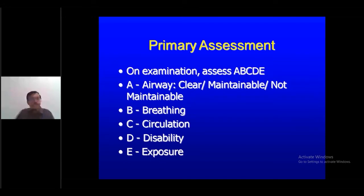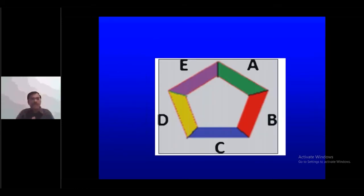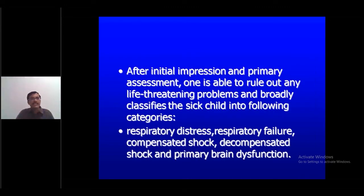After the initial impression, proceed to the ABCDE of primary assessment: A for airway, B for breathing, C for circulation, D for disability, and E for exposure. Every paediatrician, whether intensivist or primary OPD practitioner, should identify whether the child needs urgent or non-urgent intervention — classifying them as respiratory distress, respiratory failure, compensated shock, or decompensated shock.